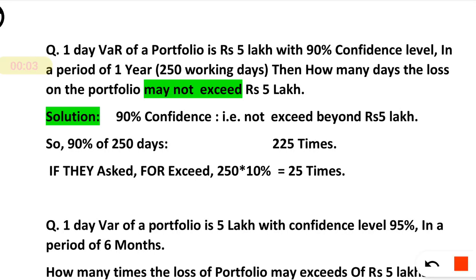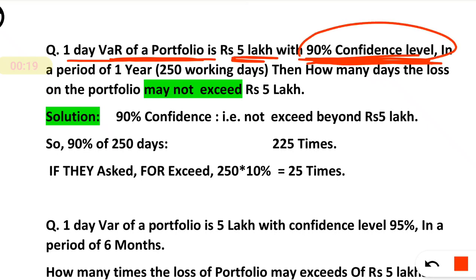Let's see the problem. One day VAR portfolio is 5 lakh with 90% confidence level. What do you mean by that? Value at risk with 90% confidence is 5 lakh. That means 90% we are confident that the risk in one day — that is loss, that is value at risk — will not go beyond 5 lakh. VAR for one day is 5 lakh means 90% we are confident that that value will not go beyond 5 lakh.